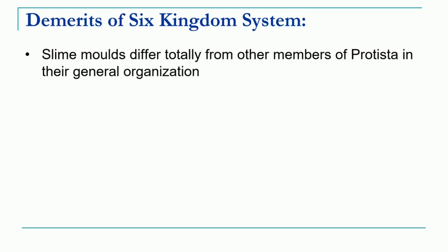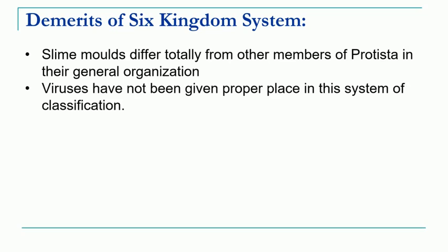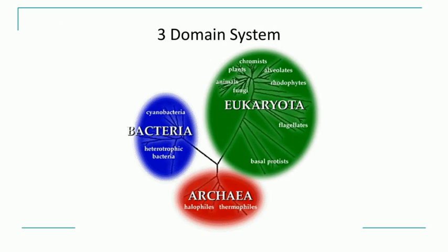There were certain demerits of this six-kingdom system. Slime molds, which differ totally from other members of Protista in their organization, could not get a proper position — they were placed into kingdom Protista but do not share the exact properties of protists. Additionally, viruses, viroids, and prions did not get any position in this system, just as in the five-kingdom classification. This was the second major drawback of this system.